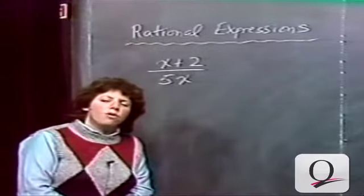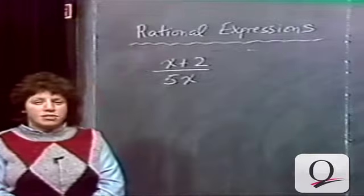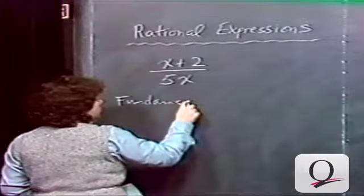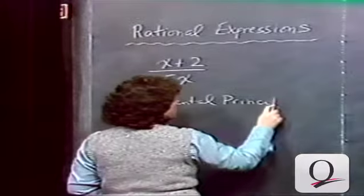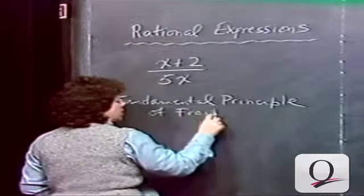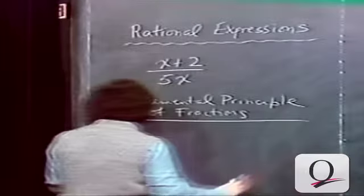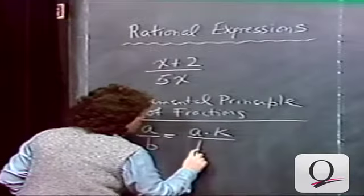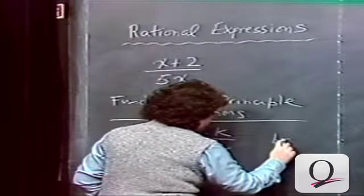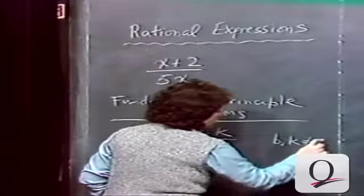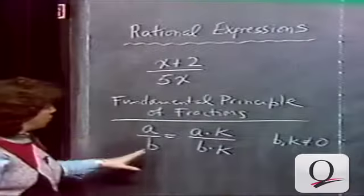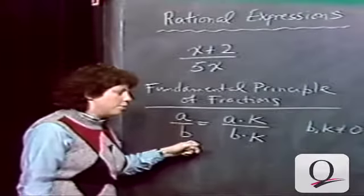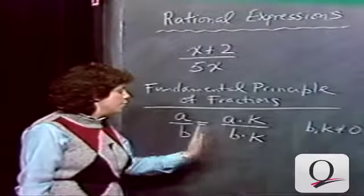The basic plan is to go over what we did with arithmetic fractions and apply these same ideas to algebraic fractions. The fundamental principle of fractions states that a over b equals a times k over b times k, where b and k are not equal to zero. If you start with a fraction a over b and multiply the top and bottom by the same non-zero quantity k, you get an equivalent fraction.